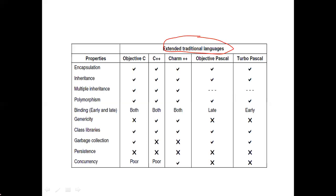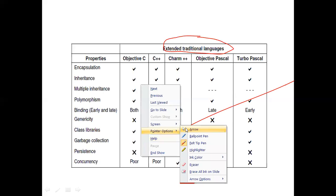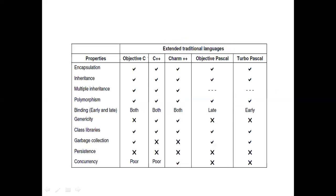A pure object-oriented language will not support the procedure-oriented paradigm — it is completely object-oriented, and every program requires a class. Examples of extended traditional languages include Objective-C, C++, Turbo Pascal, and others. These will support both object-oriented as well as procedure-oriented programming.